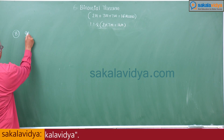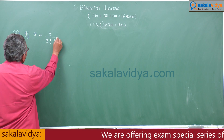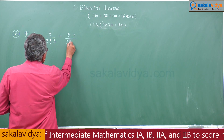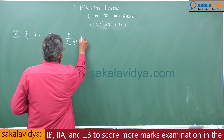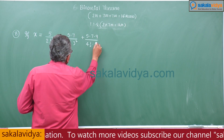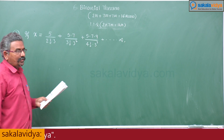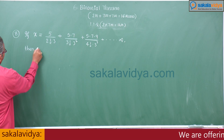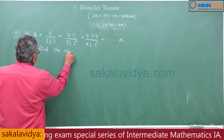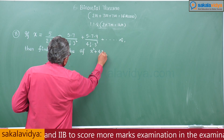Eighth problem: if x = 5/(2! · 3) + 5·7/(3! · 3²) + 5·7·9/(4! · 3³) + … infinity, then find the value of x² + 4x.